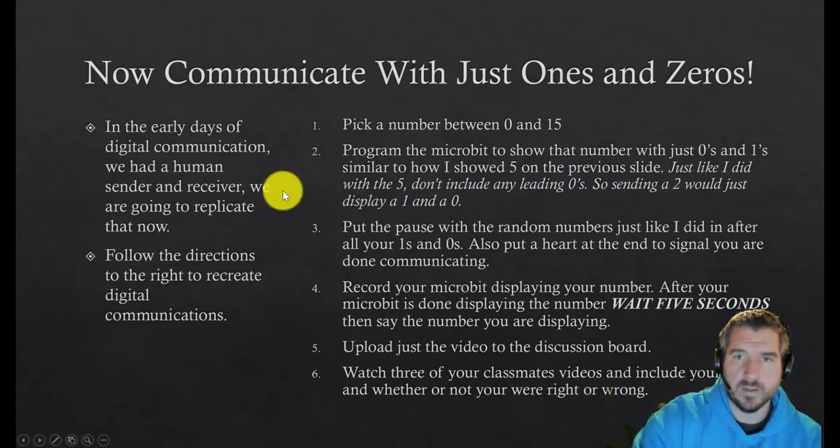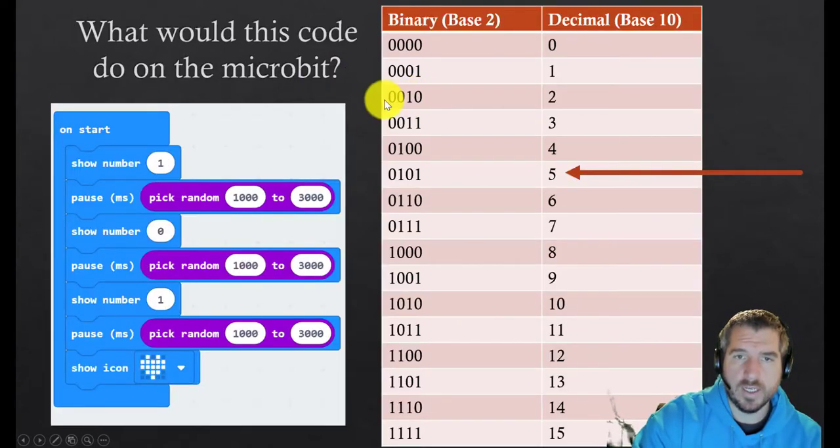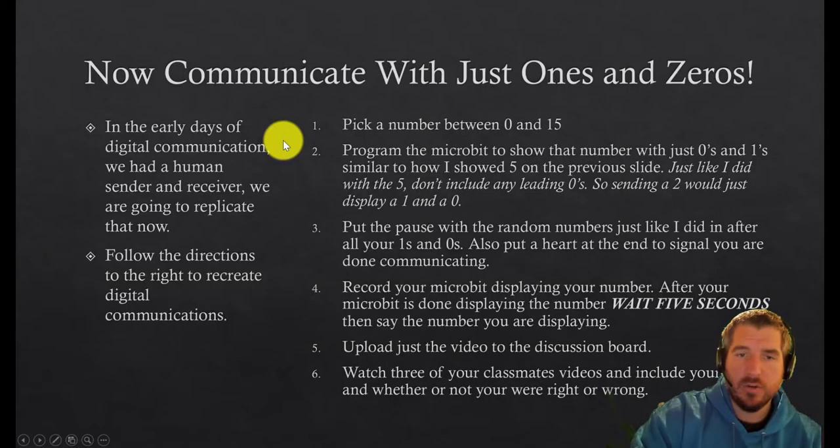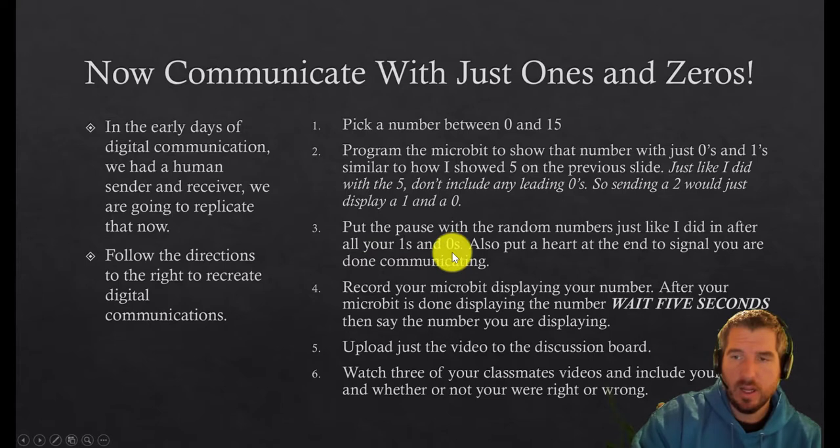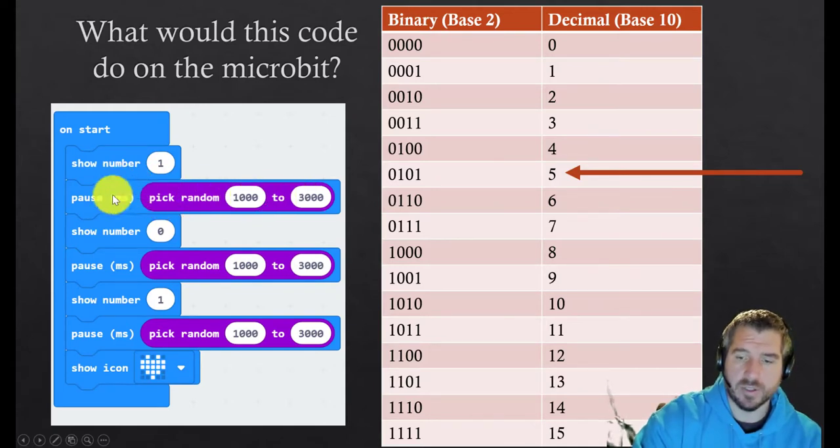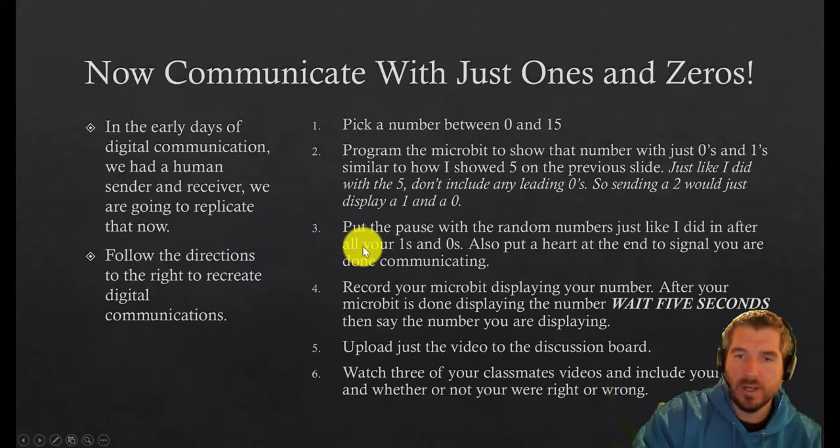And the other thing is you're not going to include any leading zeros. So like I said, if you show a two you would just display a one and a zero because for a two here you don't need that leading zero, you don't need that leading zero, so you just display a one and then a zero. And then you still want this pause with the random numbers just like I did after all your ones and zeros. So keep this pause and just do exactly like I did with the pick random one thousand to three thousand after all of your numbers are displayed. And you also want to put a heart at the end to signal you're done communicating.